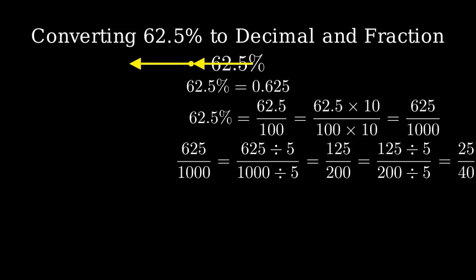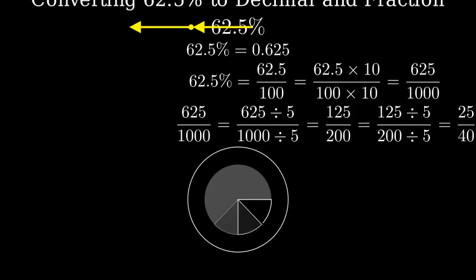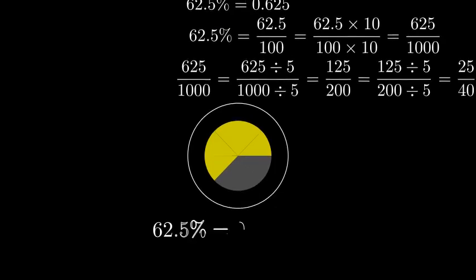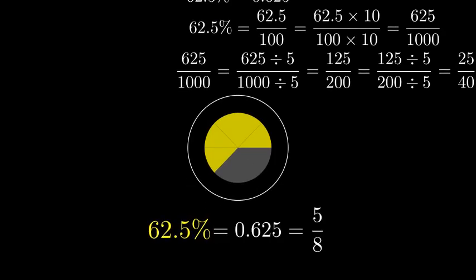Let's visualize what 5 eighths looks like. Here's a circle divided into 8 equal parts with 5 of those parts highlighted. This represents our fraction 5 over 8. So, to summarize, 62.5% is equal to 0.625 and 5 over 8.